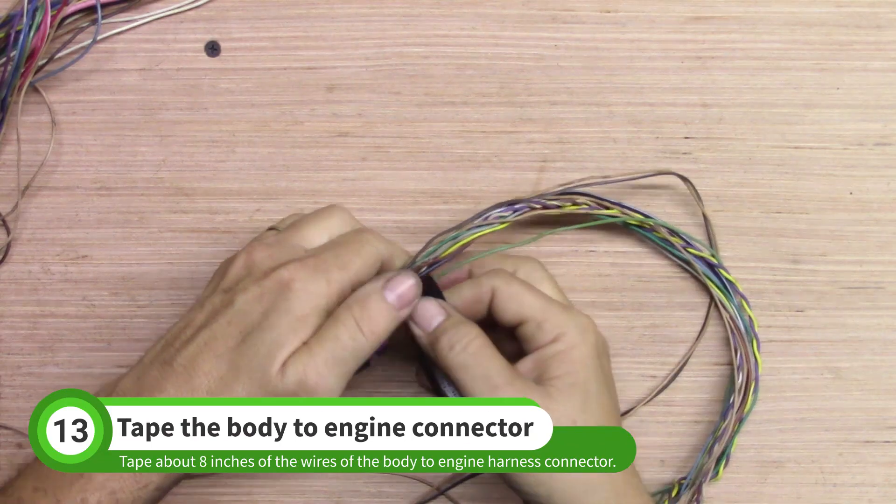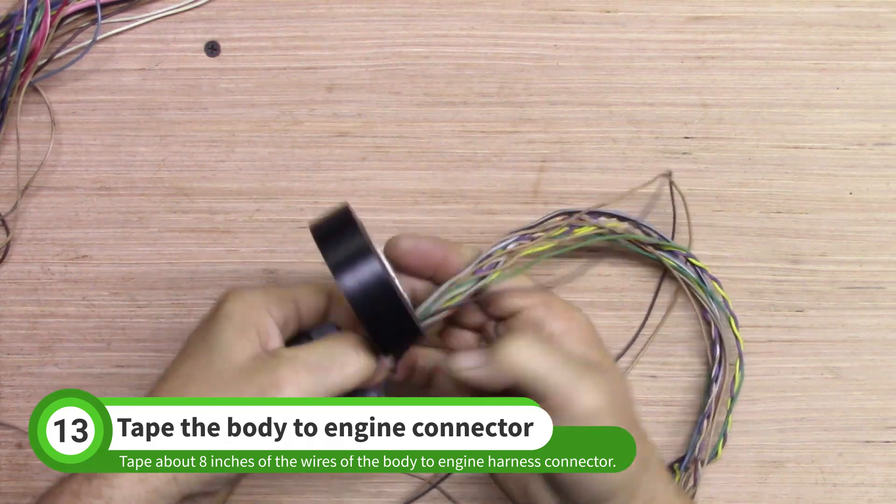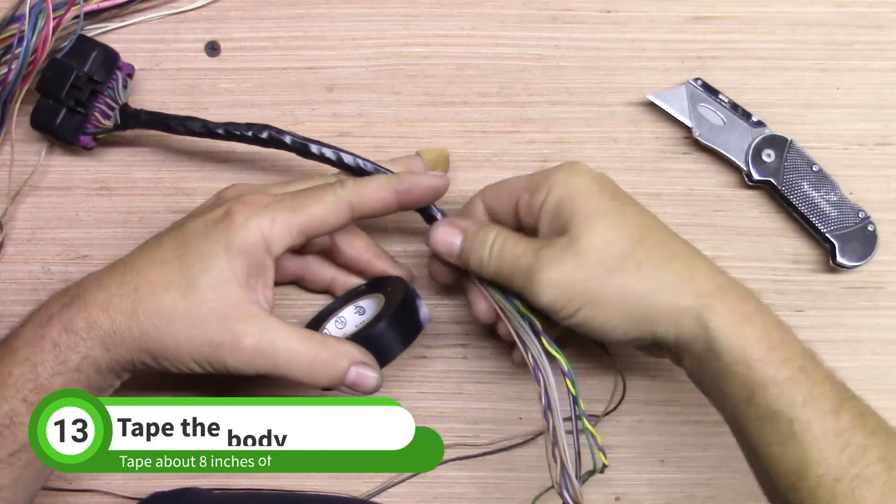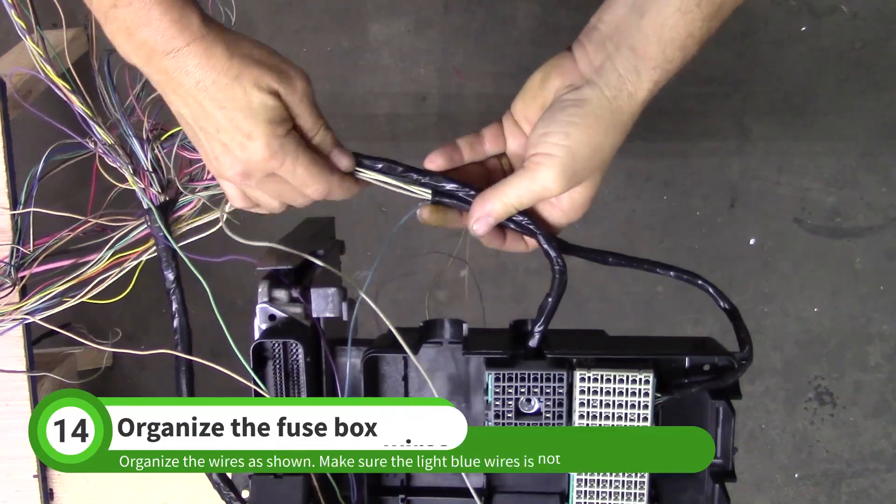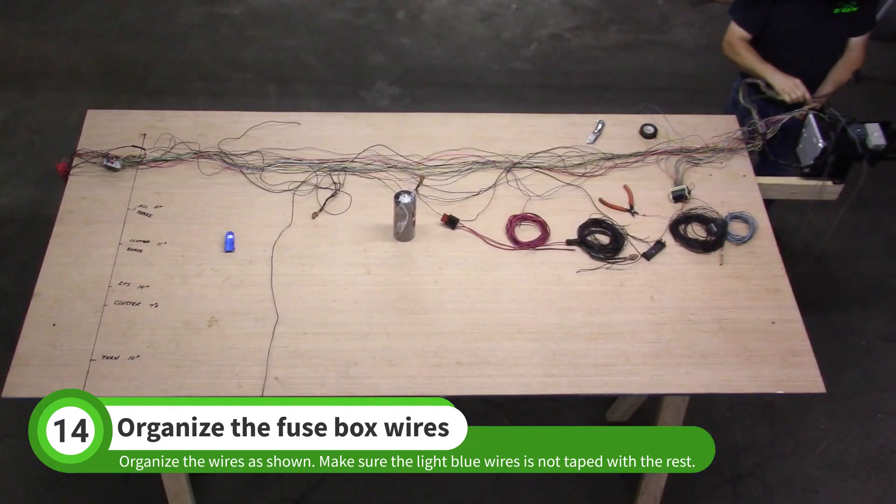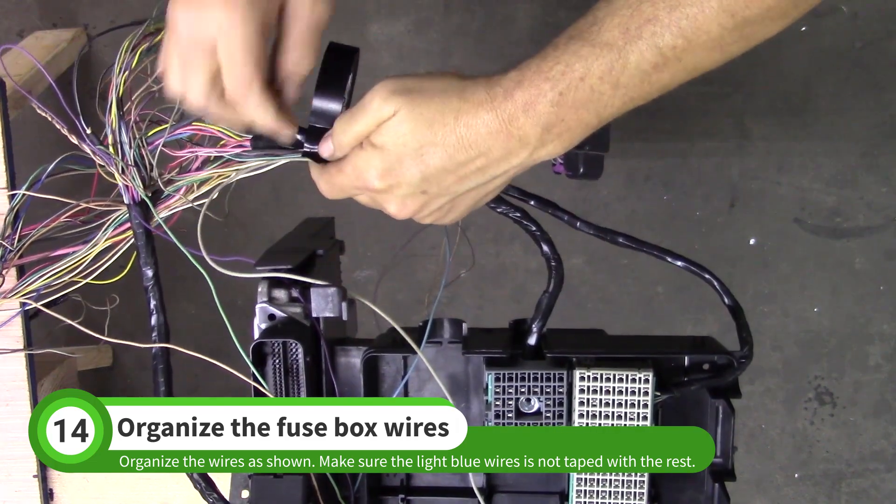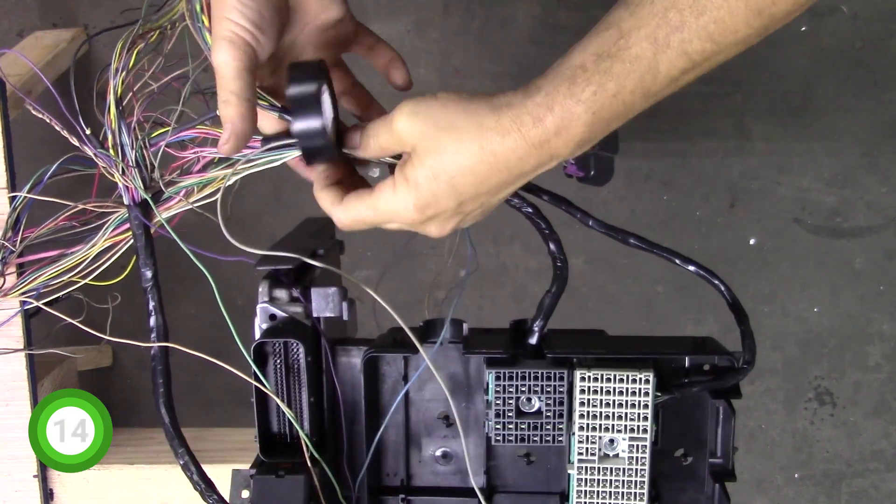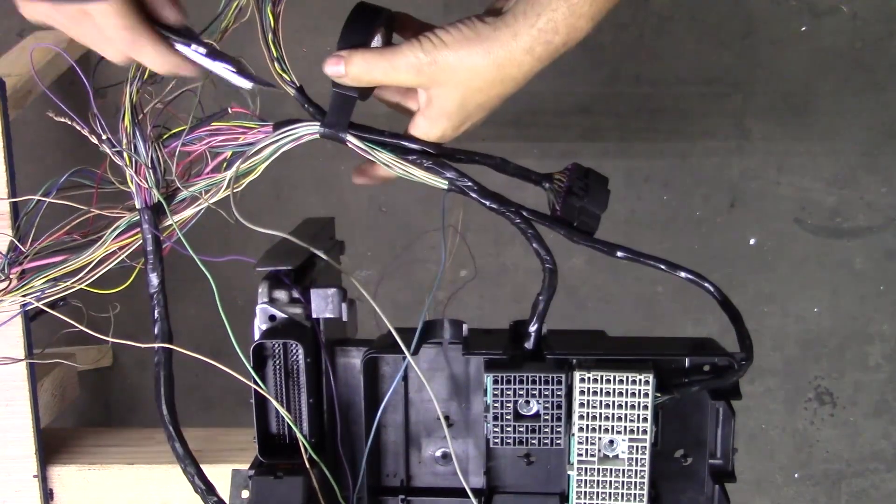Next, tape up about 8 inches of the body to engine harness connector. Group the wires near the fuse box housing as shown. The light blue wires should aim the opposite direction of the other wires. Hold the body to engine harness connector next to the fuse box wires and tape the wires together. The shape of your harness should match ours.